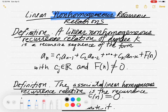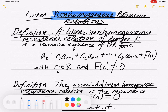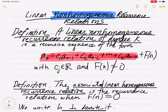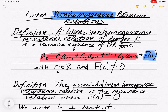So what does a non-homogeneous situation look like? Basically, it looks like the homogeneous case. So you have a recurrence relation of degree k. The red part is called the homogeneous part. And then over here in blue you get this extra function — that's not zero. So when that is not zero, you get what's called a non-homogeneous recurrence relation. The red part there is the associated linear homogeneous recurrence relation.